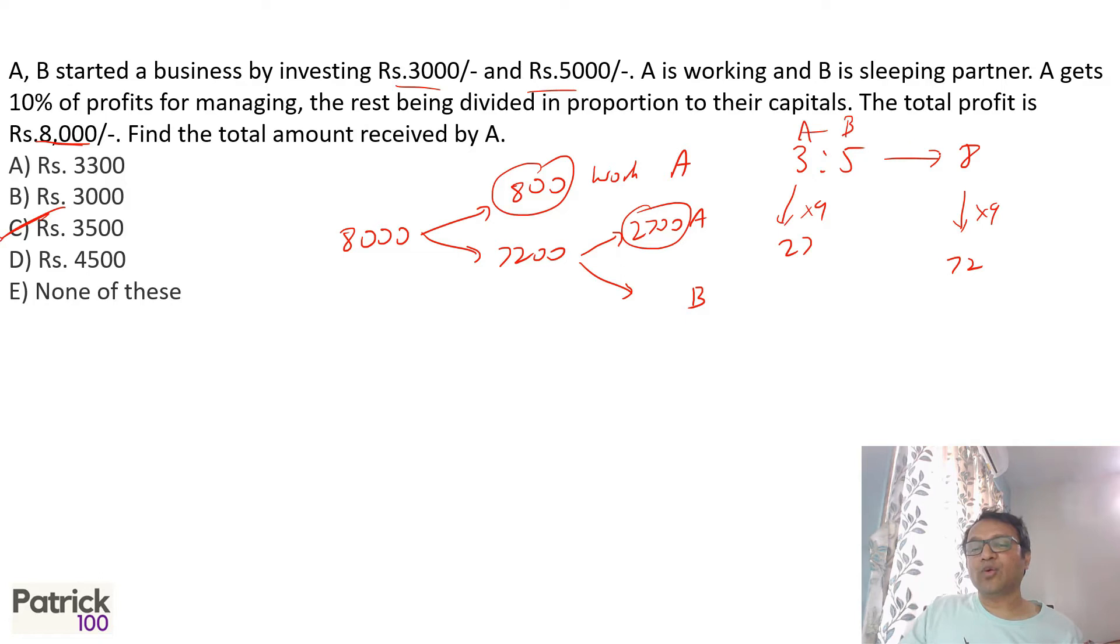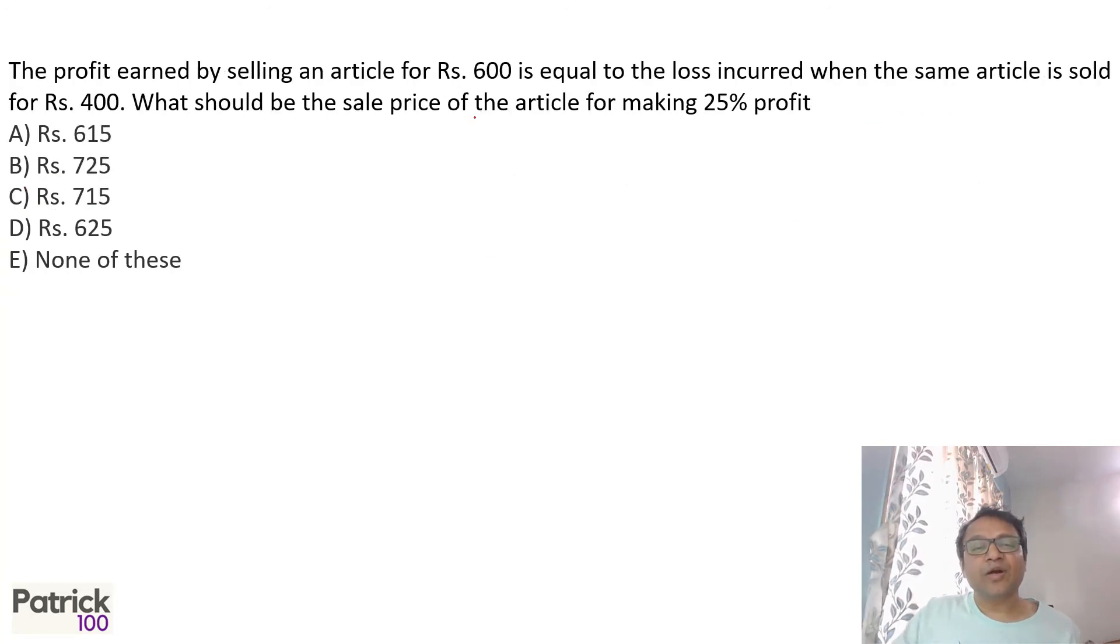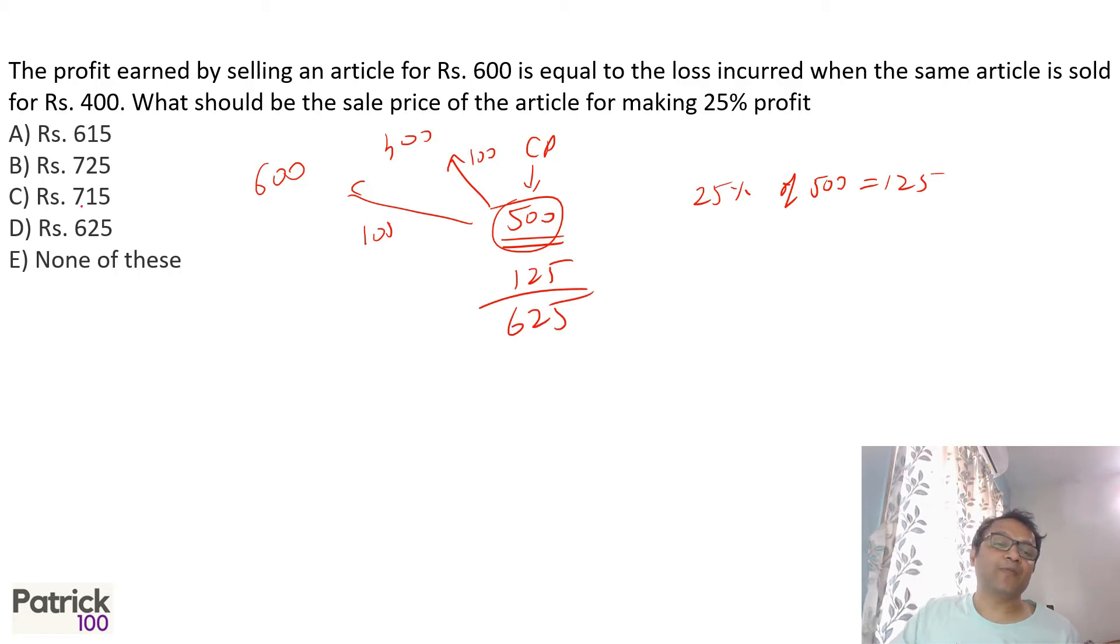So A to B is 3 to 5, total is 8. 8 nines are 72, so 3 nines are 27, so 2700 is what A gets from the profits plus 800 for working, you get total 3500. Now profit earned while selling an article for Rs. 600 is equal to loss incurred. Profit is equal to loss, that means the cost price will be exactly in between, which is 500 between 600 and 400. Because if cost price is 500, they make 100 rupees profit out here and 100 rupees loss out here. Profit is equal to loss. Now 25 percent profit on 500, so 25 percent of 500 is nothing but 125. So you get 125 profit, so add 125 to 500, you get 625. You can do this orally also. If you do it orally you become much faster while solving it.